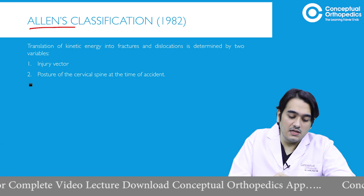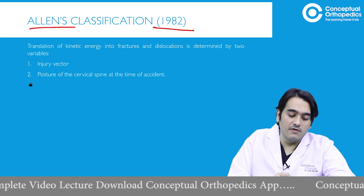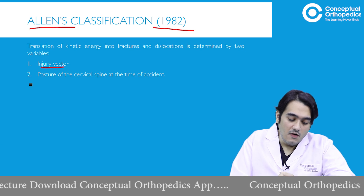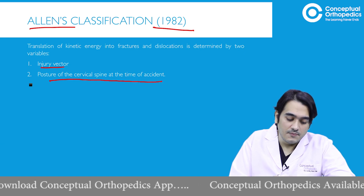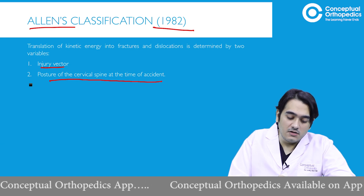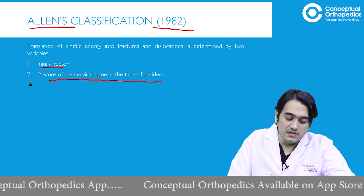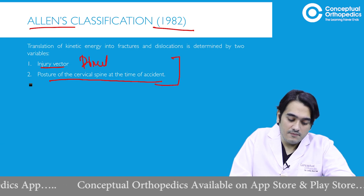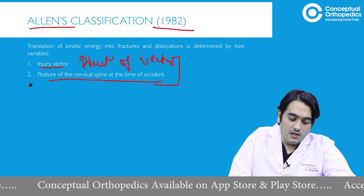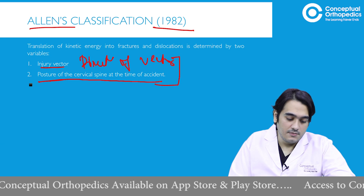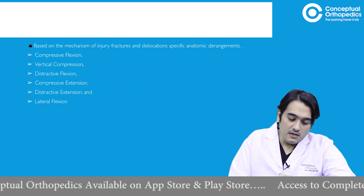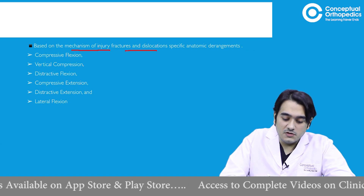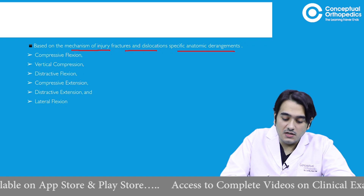Allen and Ferguson in 1982 devised their own classification system, primarily based on the injury vector and the posture of the cervical spine at the time of the accident. The translation of kinetic energy into fractures and dislocations is determined by the direction of the vector of force and the posture of the cervical spine at the time of the accident. Based on the mechanism of injury, they described fractures and dislocations producing specific anatomical derangements.